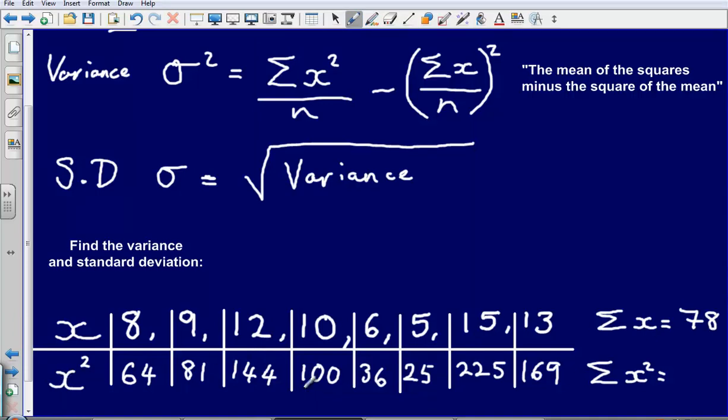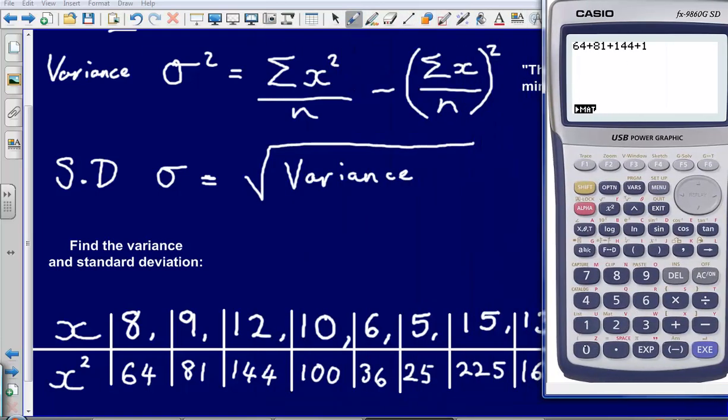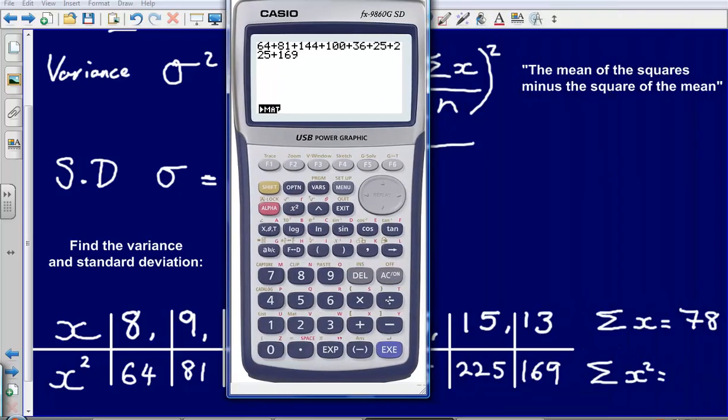And now let's calculate the sum of my values squared. So that's going to be 64 plus 81 plus 144 plus 100 plus 36 plus 25 plus 225 plus 169. Are there any more behind there? No, that's it. That gives us 844.